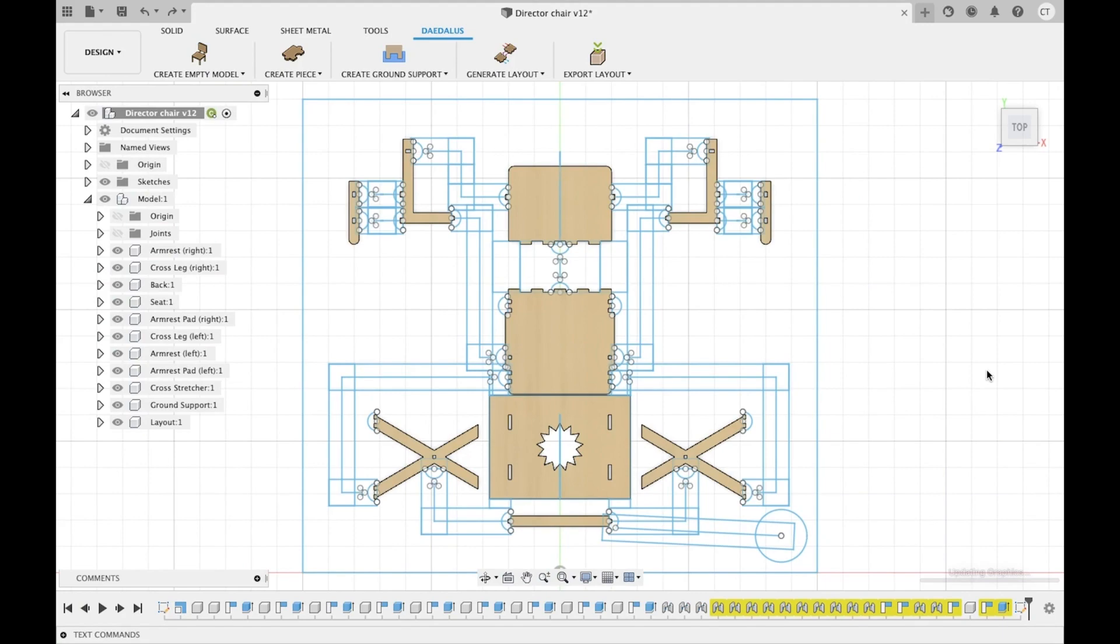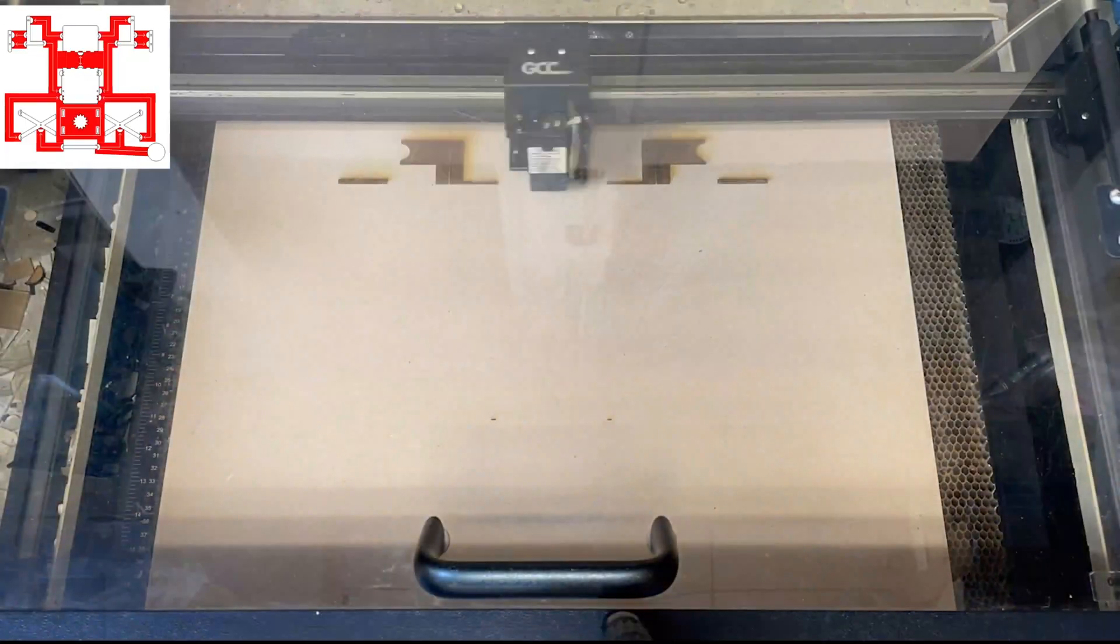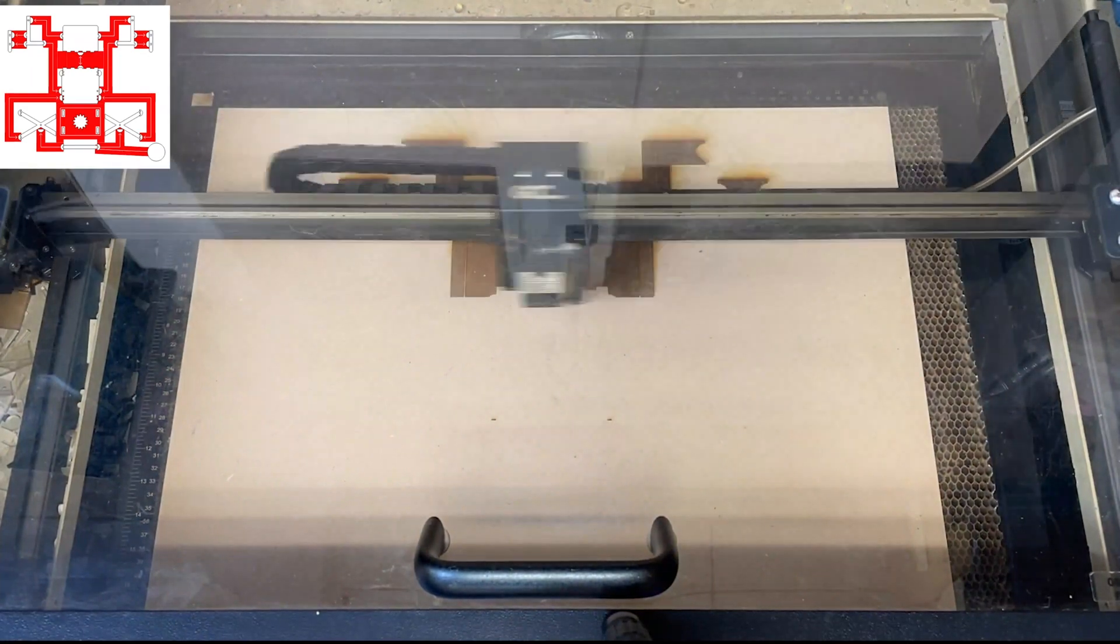Given these inputs from the user, Daedalus can finally generate a colored SVG file that includes both tactile aids and laser cut components ready to print for laser cutting.